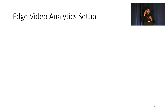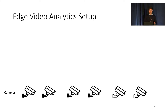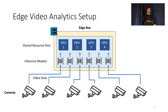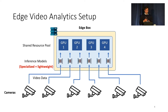A typical edge video analytics setup looks like this. You have a set of cameras producing video streams which you want to run analytics on. Then you have an edge box which has a shared pool of resources, such as the four GPUs you see here. Each video stream runs its inference model on this shared pool of resources by providing the data to the edge box. However, because these inference models are running in resource-constrained environments, these are generally specialized lightweight versions of their larger counterparts.